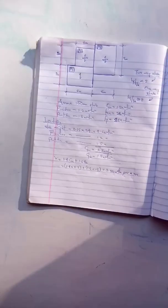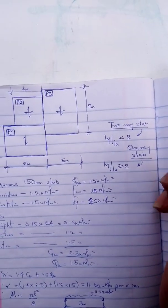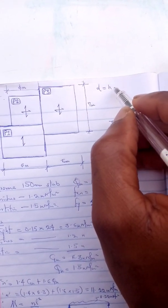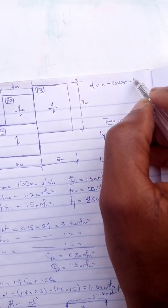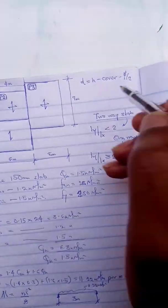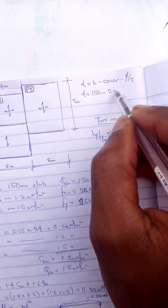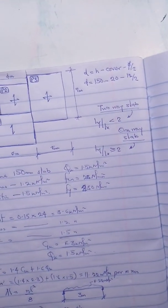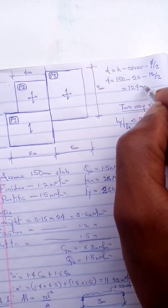Let's go into the design properly. To obtain our effective depth d, it's obtained using h which is the total height minus cover minus the diameter of internal reinforcement over two. So we have our d to be 150 minus the cover 20 minus 12 diameter divided by two, which gives us 124 mm effective depth for the design.